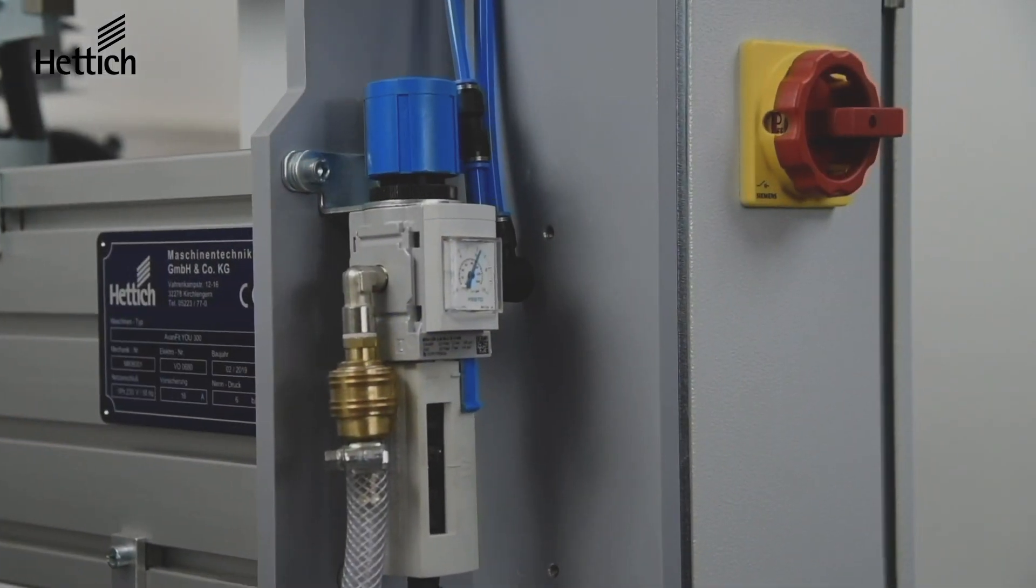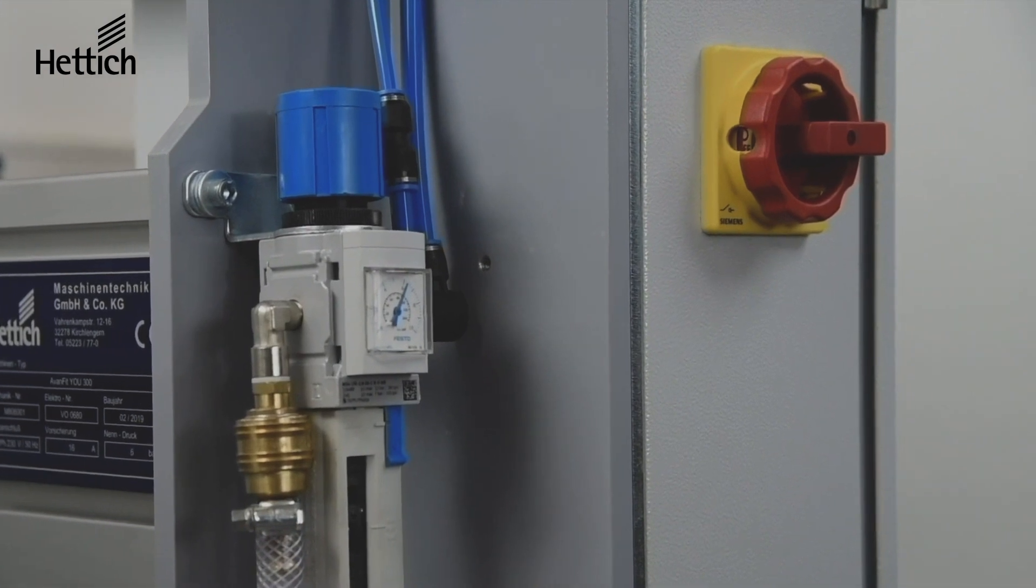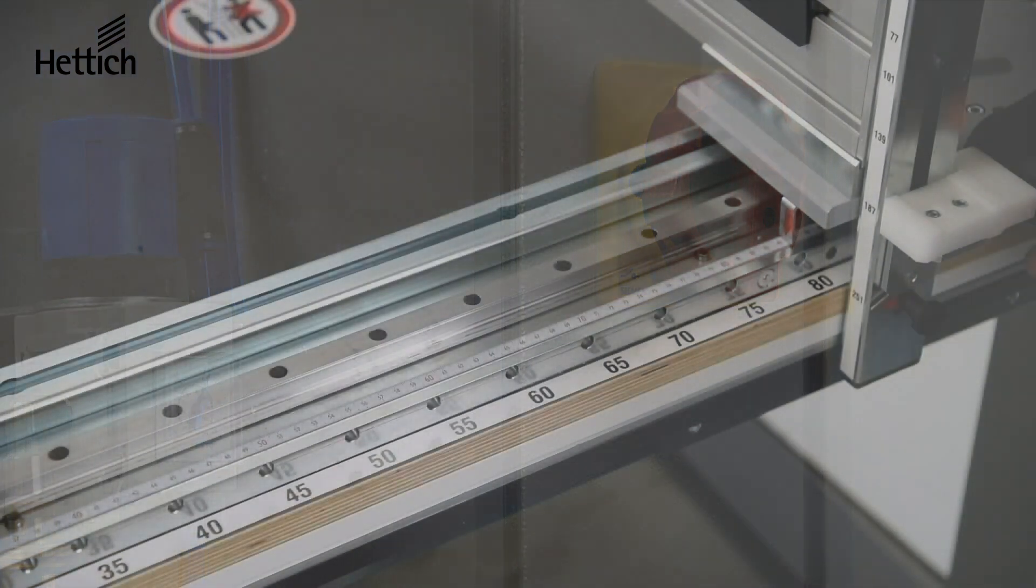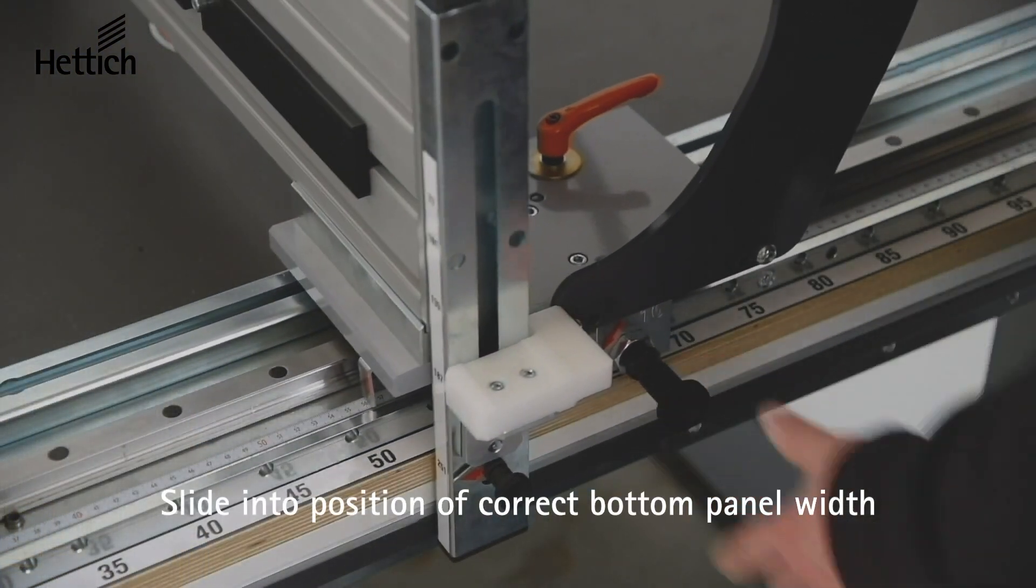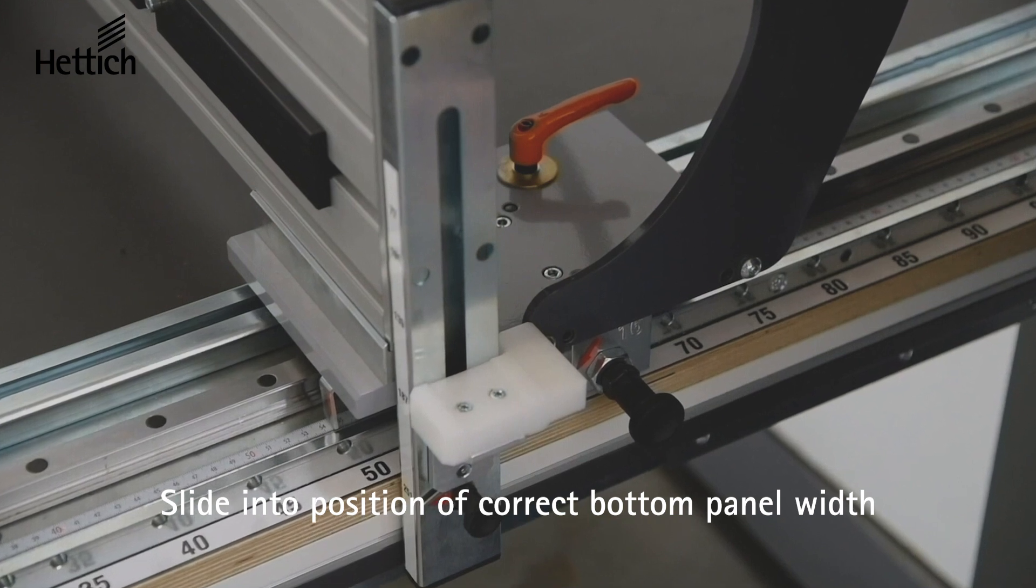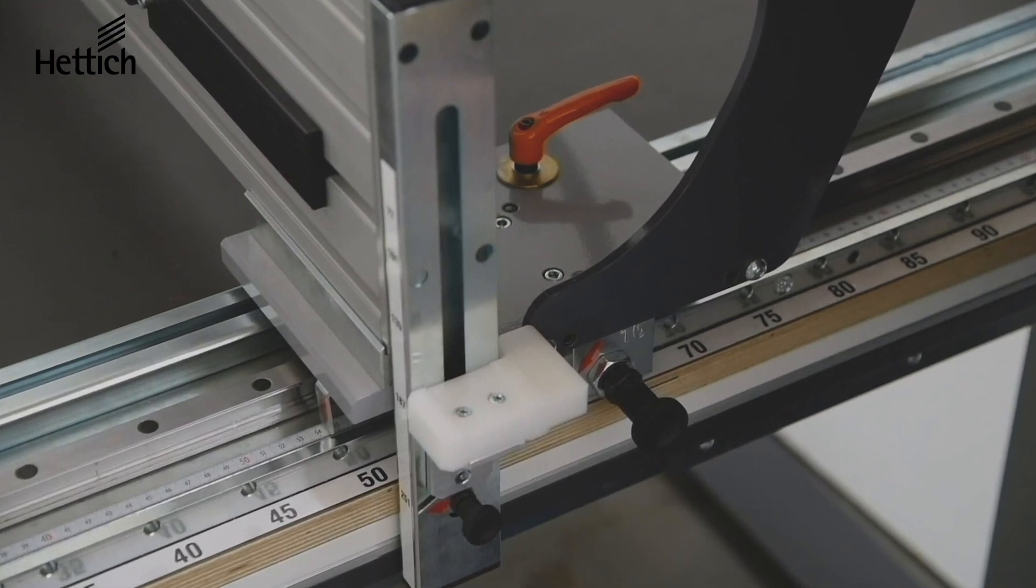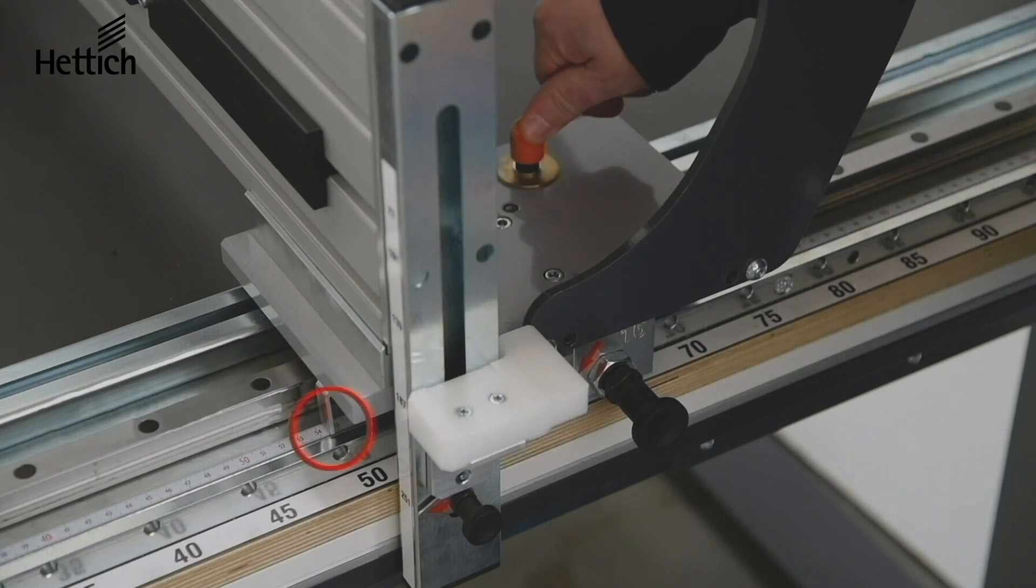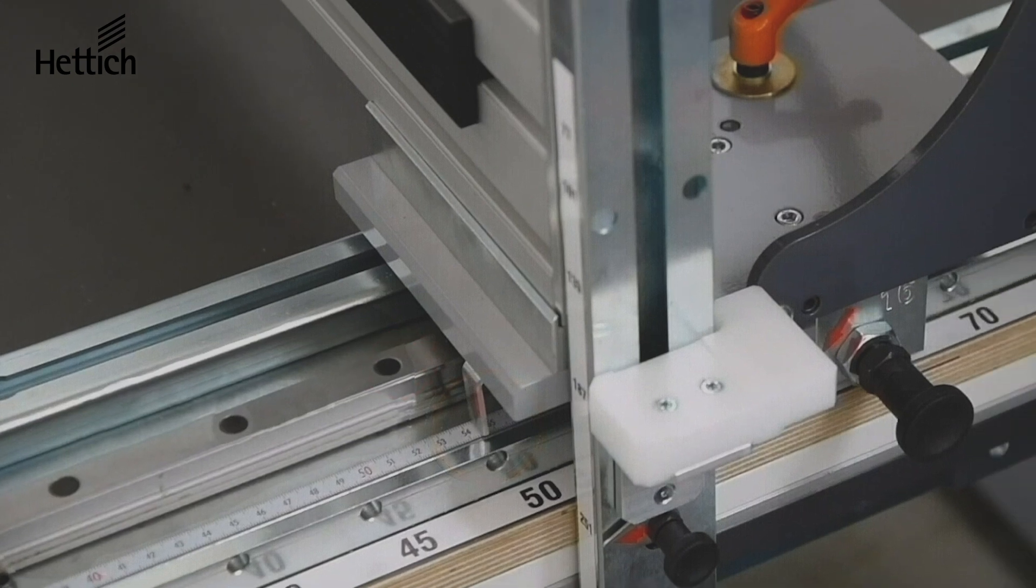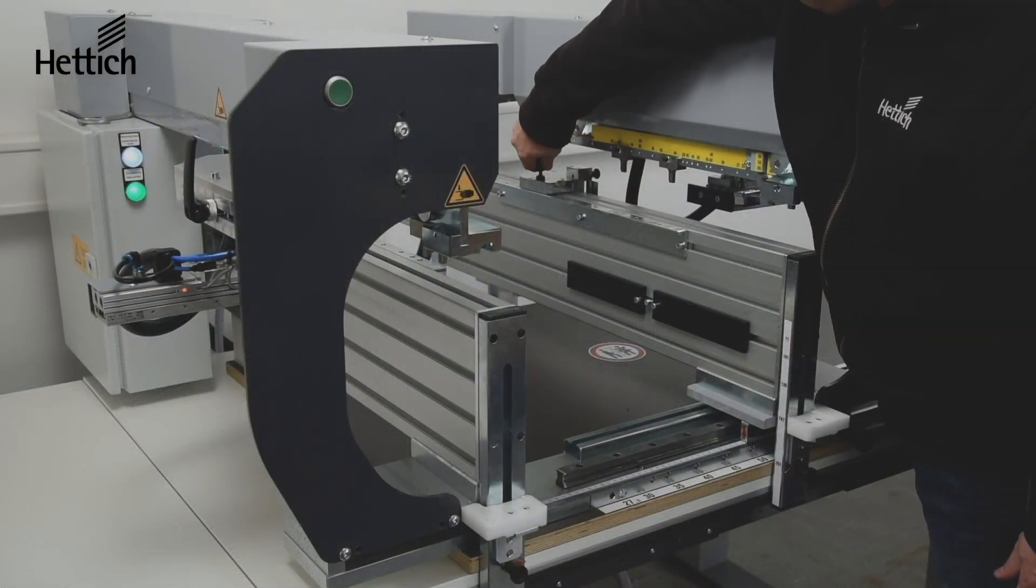Once you have everything organized, you're ready to assemble your drawer. First ensure that the airline is connected and on, then turn the machine on by turning the red knob to the upper position. Next slide the left portion of the machine to the appropriate bottom panel width. You can use the scale on the machine for reference. Make sure to lock the position in place by tightening the red handle. Note there are preset stops on the rail for some of the more popular widths.